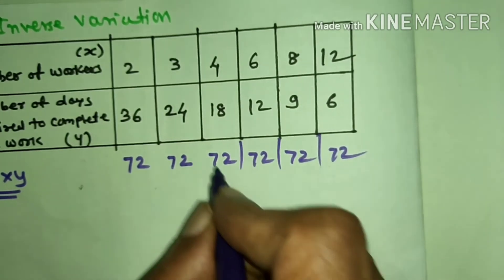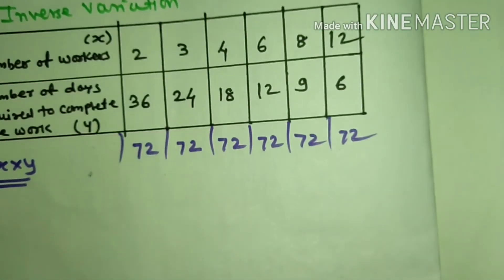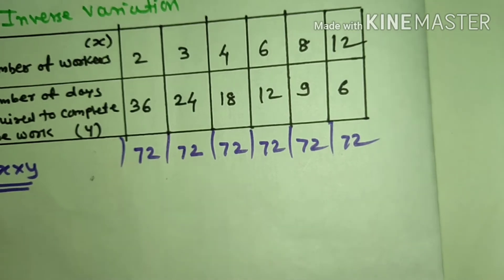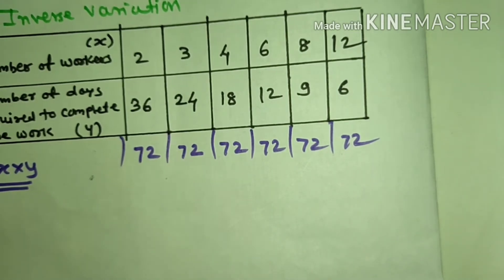So x into y is constant. In direct variation, the x and y ratio is constant, but here the product x×y is constant. So our definition is about to be stated.